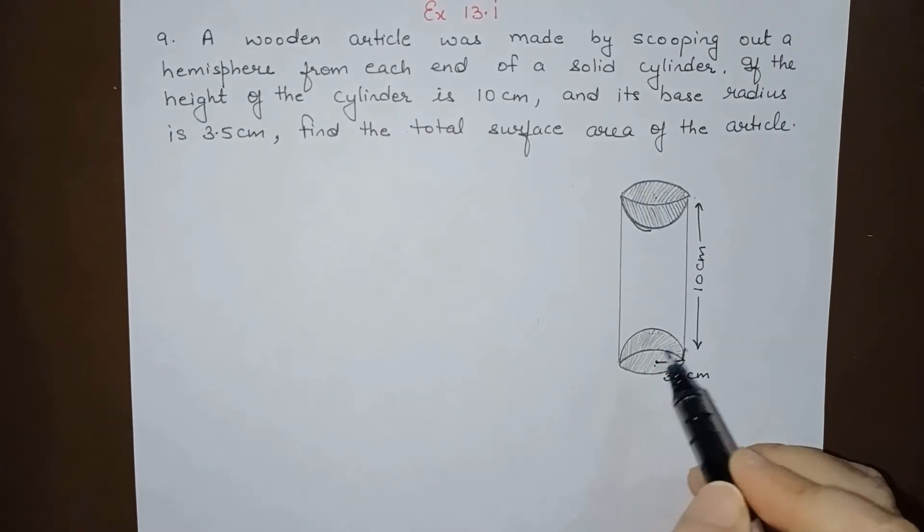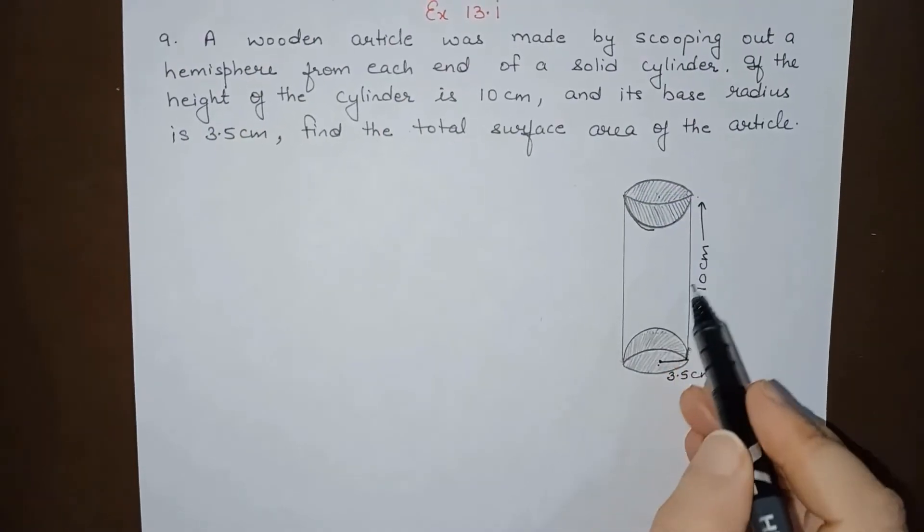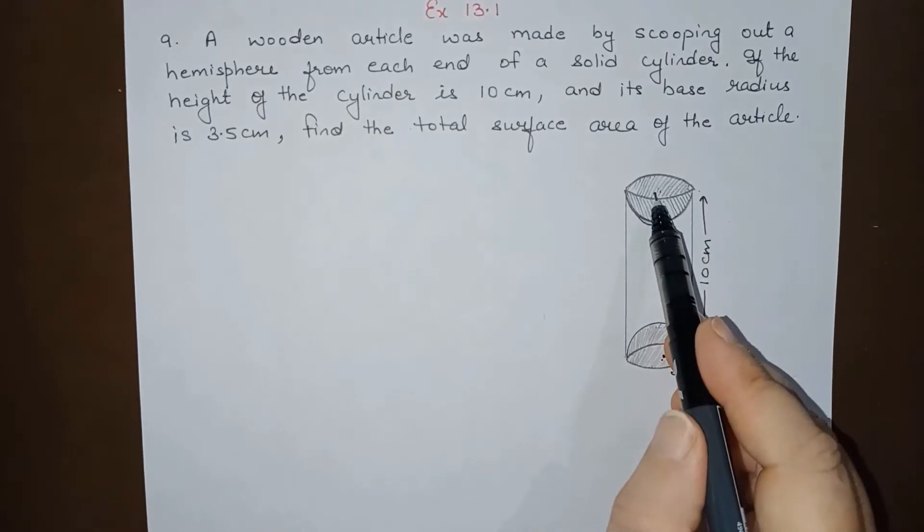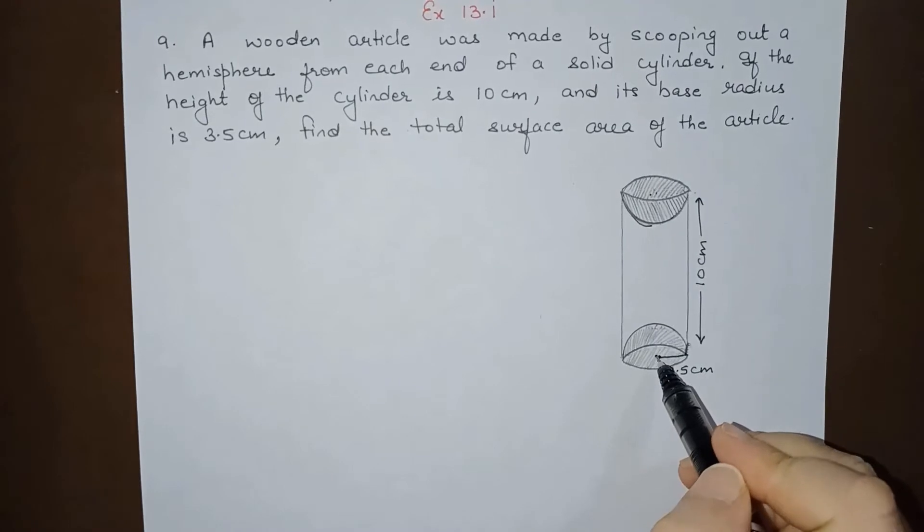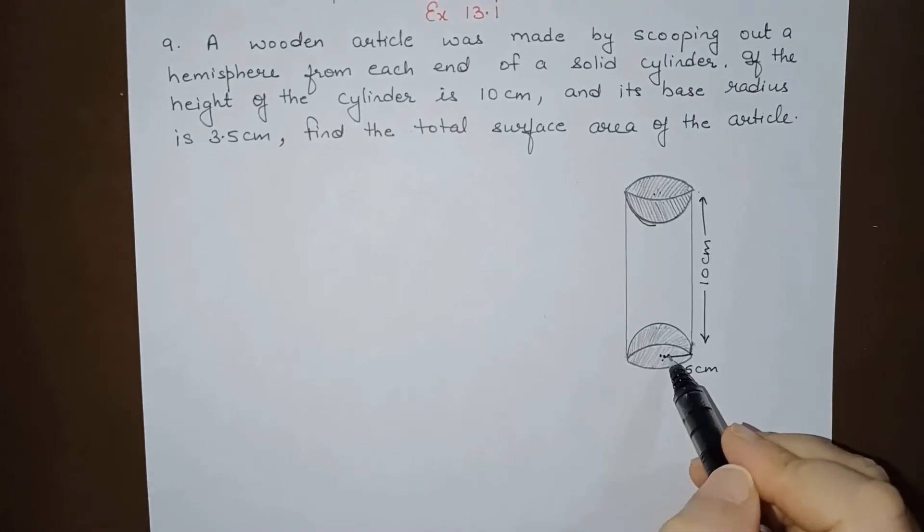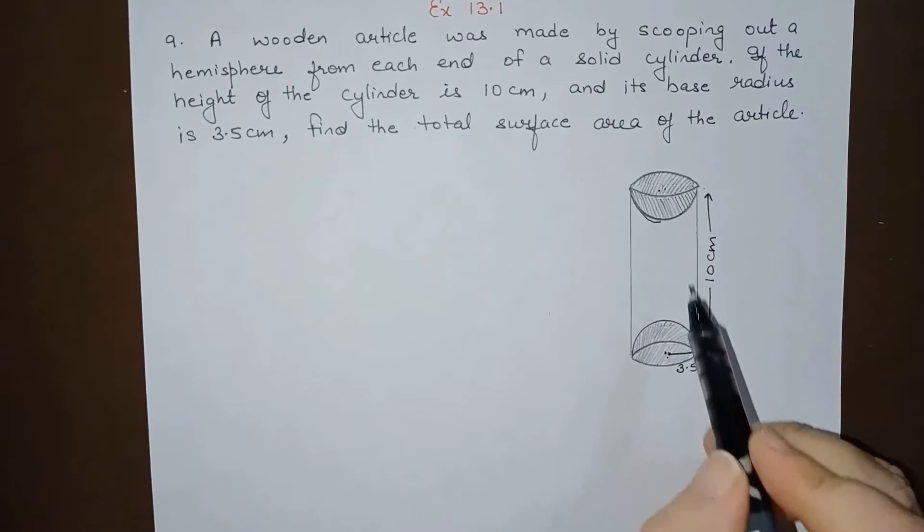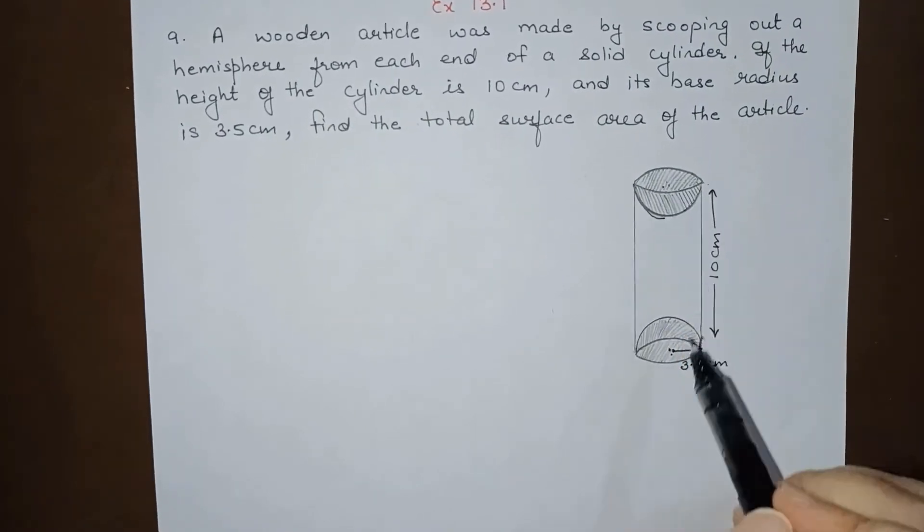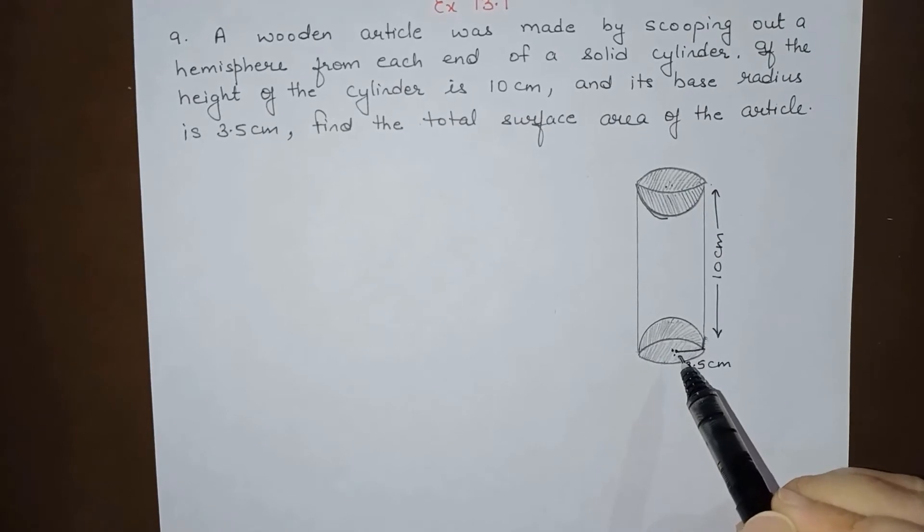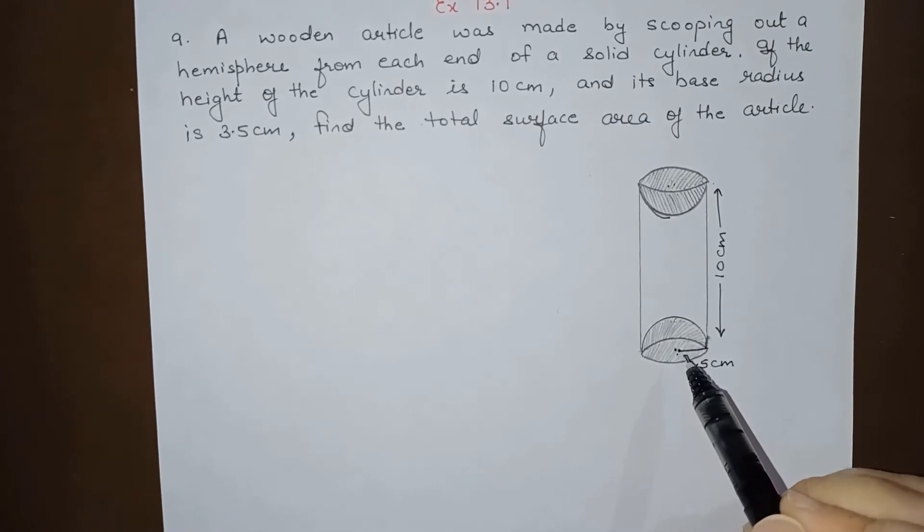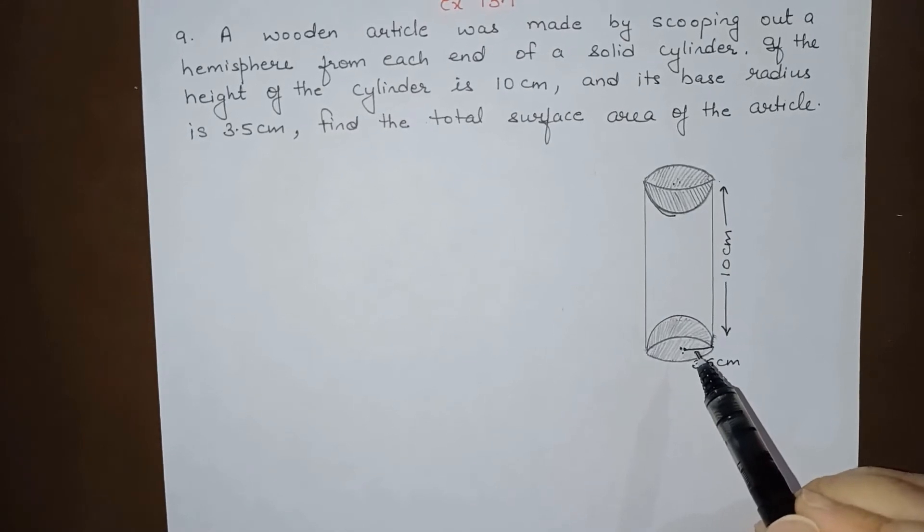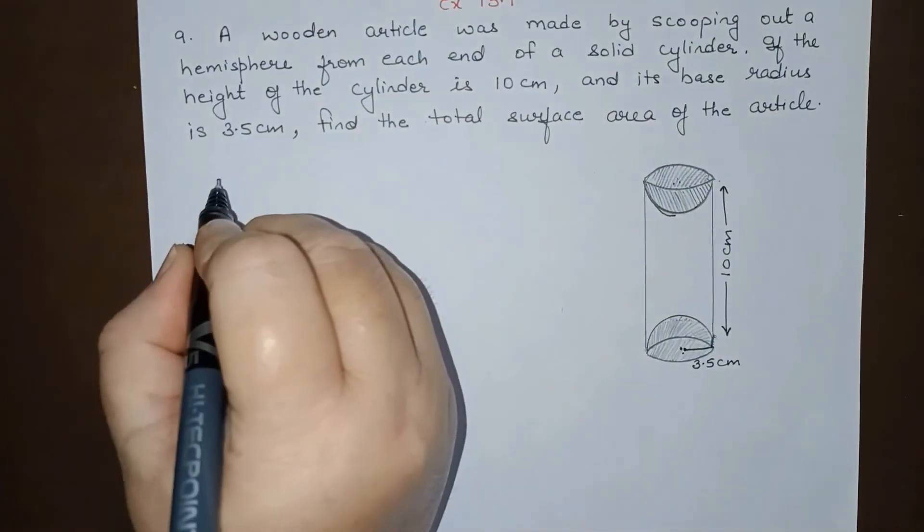So the total surface area of the solid will be curved surface area of the cylinder plus curved surface area of this hemisphere and curved surface area of this hemisphere. Remember, we will not subtract the curved surface area. As when we see it from top and bottom, we can see the hemispherical parts, so we have to add their surface area.